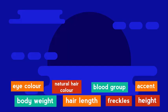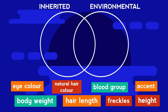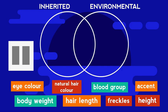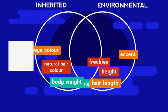Can you decide if each of these characteristics is controlled by inherited characteristics, the environment or both? Where would each go on a Venn diagram? Pause the video while you think. Did you get them all right?